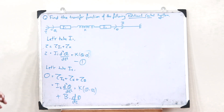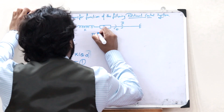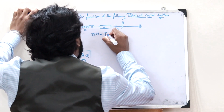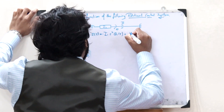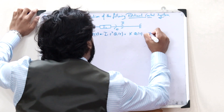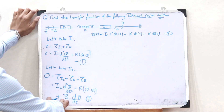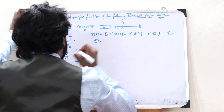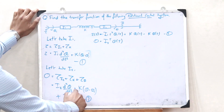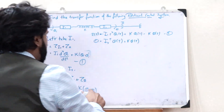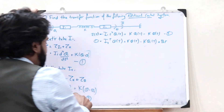Now let us take the Laplace transform of all these. Taking the Laplace transform of equation number 1, we would get T(S) is equal to I1 S squared into theta1(S) plus K into theta1(S) minus K into theta(S). Let this be equation number 3. Applying the Laplace transform of equation 2, we would get 0 is equal to I2 S squared into theta(S) plus K into theta(S) minus K into theta1(S) plus B into S into theta(S).